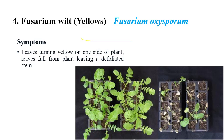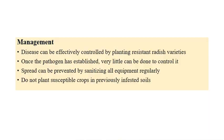Fusarium wilt, otherwise called yellows, is caused by Fusarium oxysporum. We can clearly see wilting of leaves; along with wilting, plants turn yellow in color and slowly start to defoliate. For management, the disease can be effectively controlled by resistant varieties, application of fungicides, and sanitation. Since this is a soil-borne pathogen that cannot spread through air, using properly sanitized equipment for intercultural operations is very important to manage the disease.